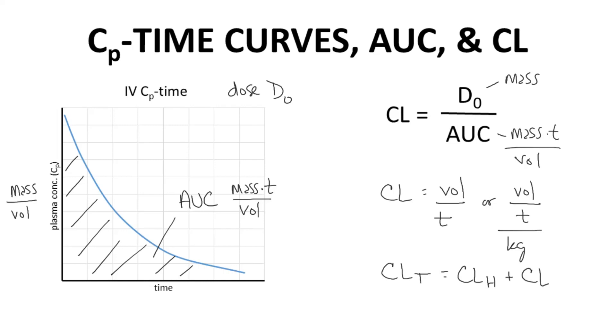Total clearance is typically the sum of hepatic and renal clearance. Renal clearance is often small relative to hepatic clearance. So total clearance is often approximately equal to hepatic clearance. Clearance is a key pharmacokinetic parameter.